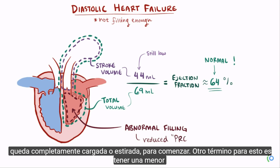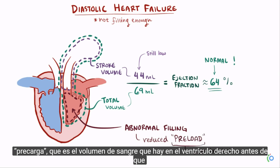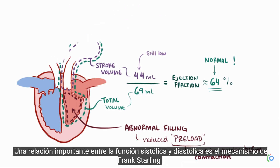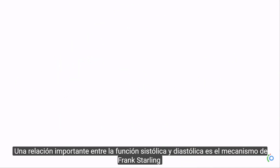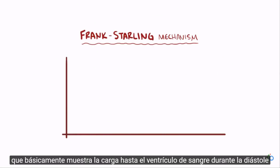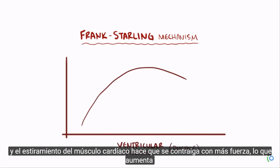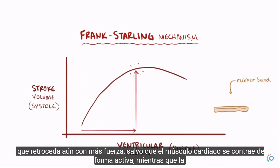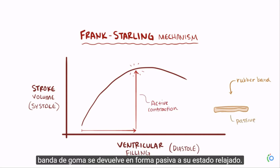Another term for this is having a reduced preload, which is the volume of blood in the ventricle right before the ventricular muscle contracts. An important relationship between systolic and diastolic function is the Frank-Starling mechanism, which shows that loading up the ventricle with blood during diastole and stretching out the cardiac muscle makes it contract with more force, increasing stroke volume during systole. This is like how stretching a rubber band makes it snap back harder, except cardiac muscle is actively contracting.